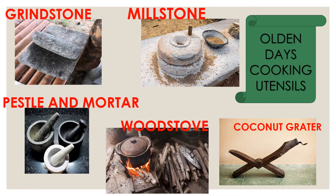Let's look at the vocabulary for old-day cooking utensils. The first one: grindstone, millstone, pestle and mortar, woodstuff, and the last one, coconut grater. I think you already can understand the function based on the pictures given.